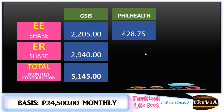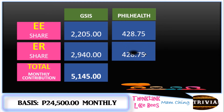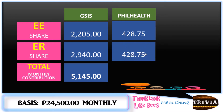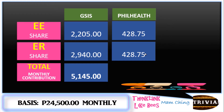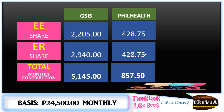We split the 3.5 percent divided by 2, giving 1.75 percent share for the employee and another 1.75 percent for the employer. So ₱24,500 multiplied by 1.75 percent equals ₱428.75 for both employee and employer, making the total ₱857.50 monthly contribution.